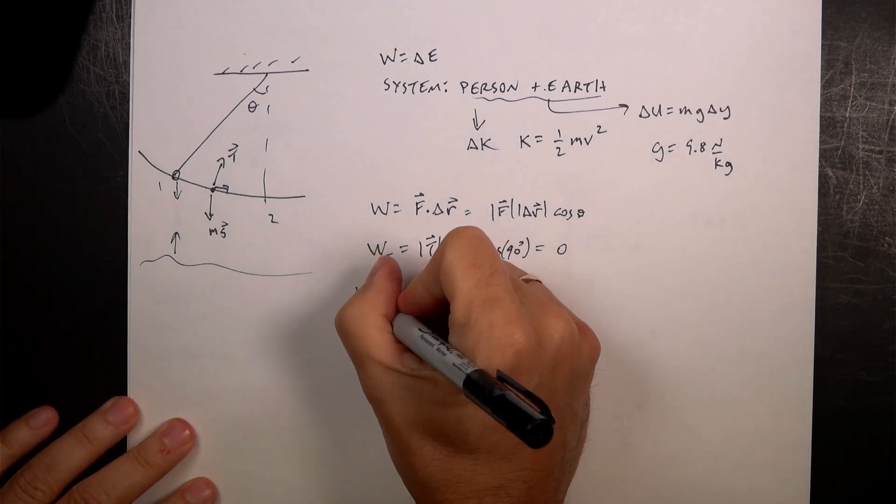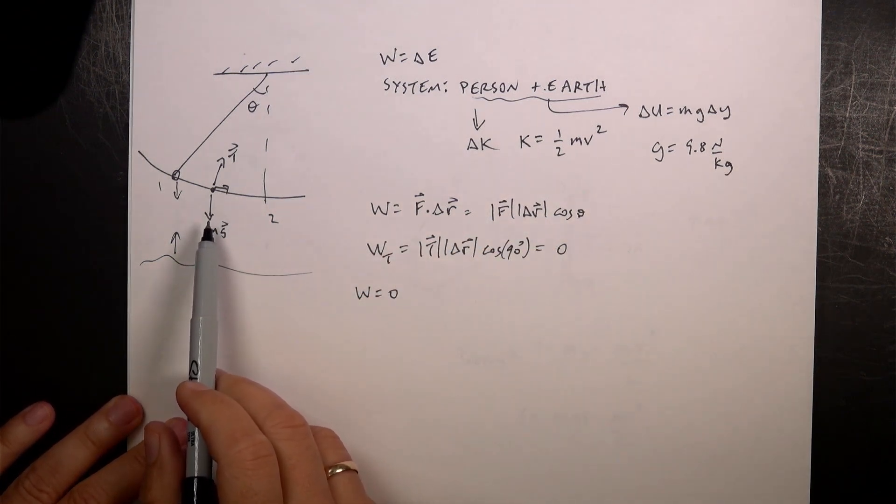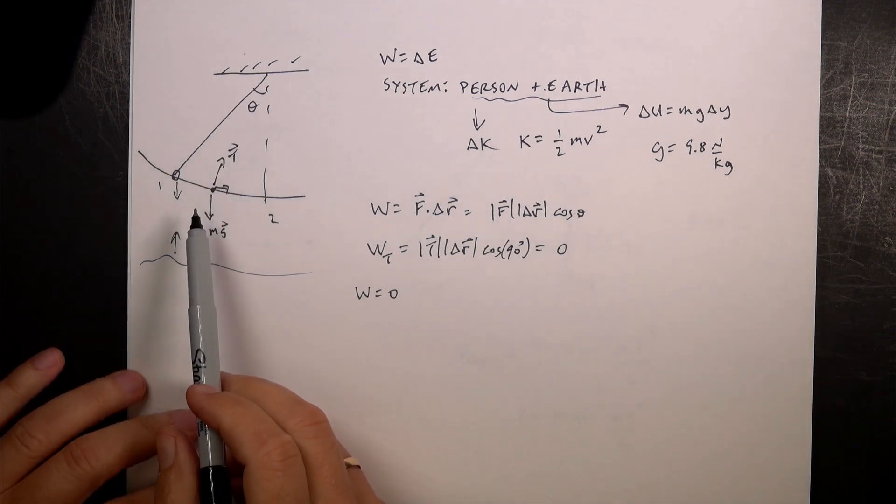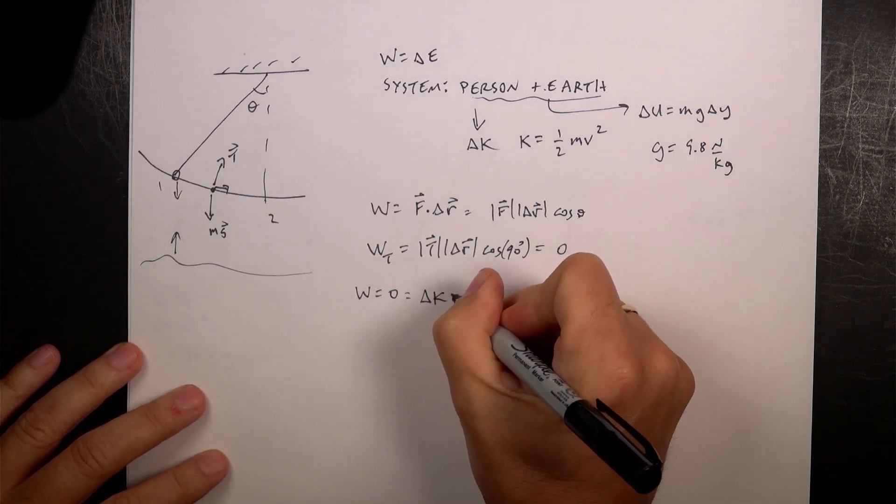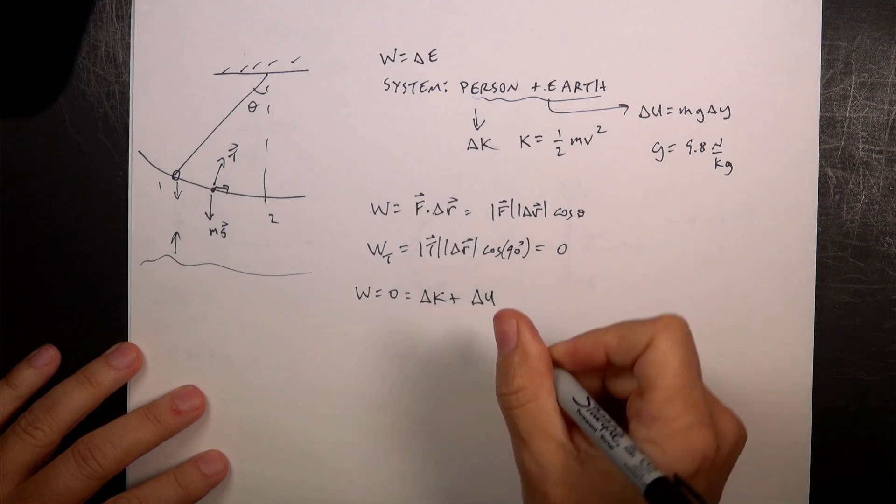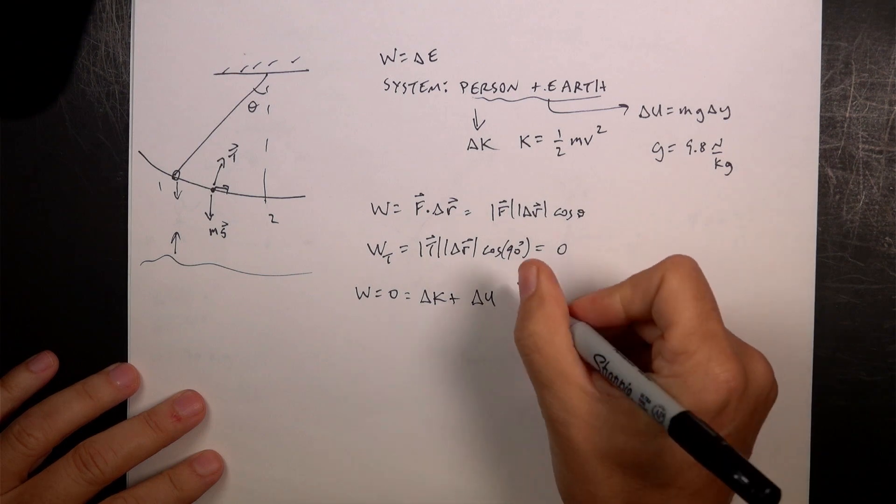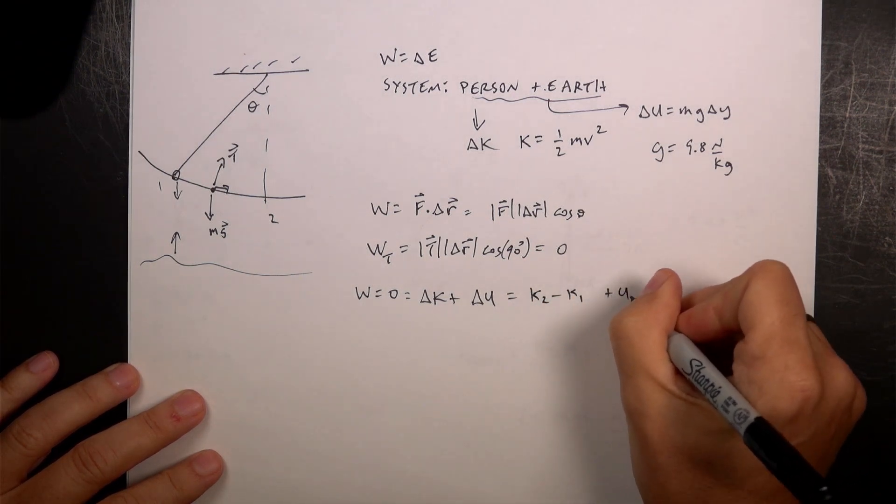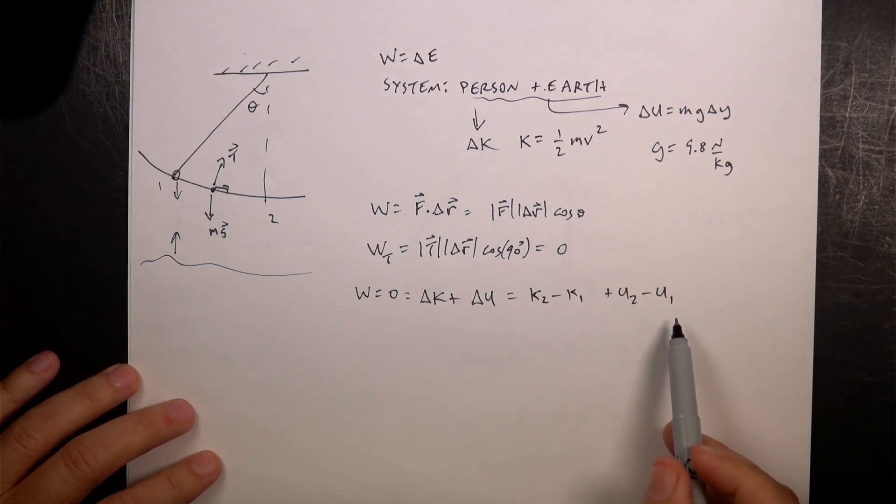So now we can write work equals zero. Now we don't do work done by gravity because it's part of the system, remember? So we can't do that. And there's no other forces acting on the system. So it's just work done by tension and then the change in energy. So it's going to be change in kinetic plus change in gravitational potential energy. The change is important. I can write this as K2 minus K1 plus U2 minus U1. So this is the change in kinetic energy. This is the change in gravitational potential energy.